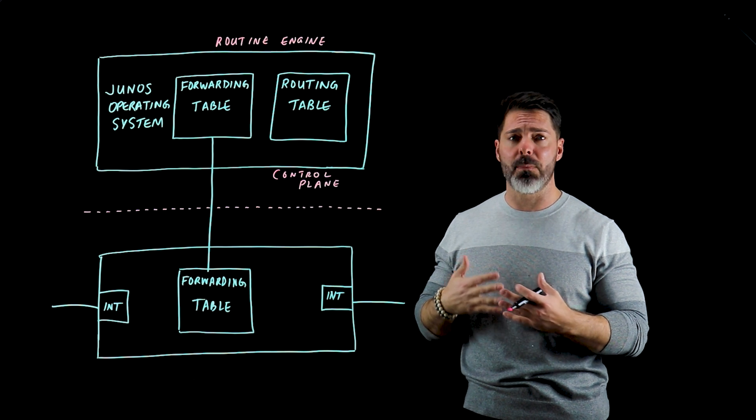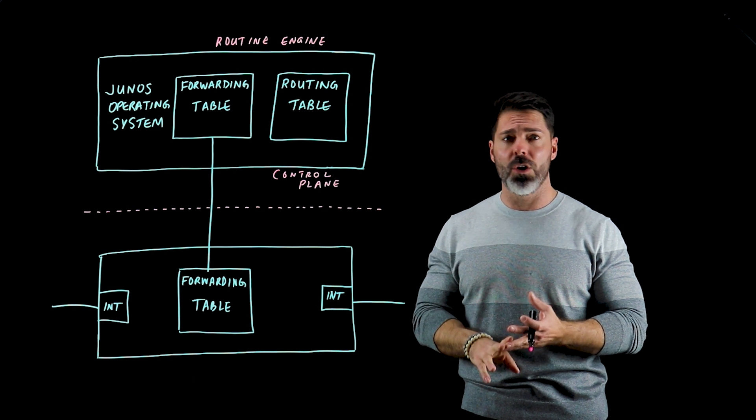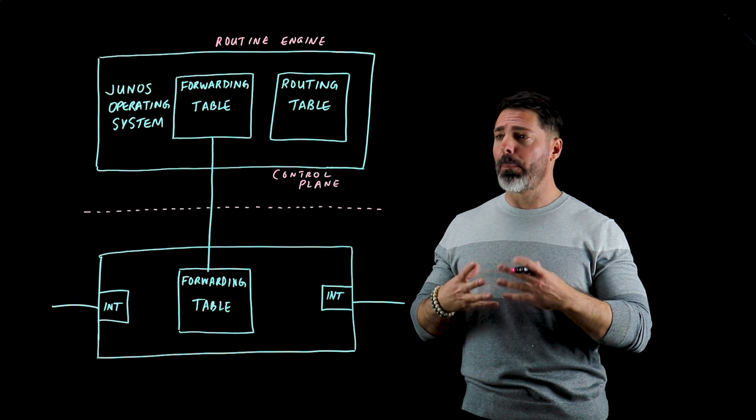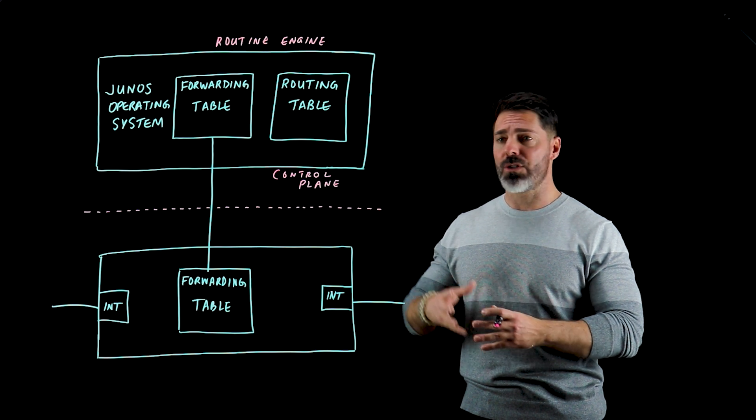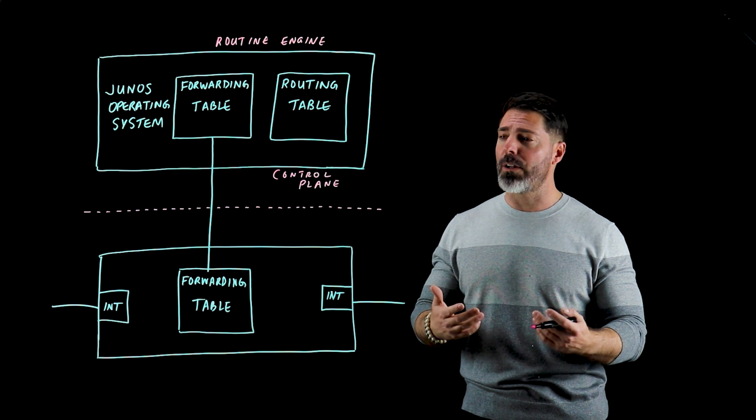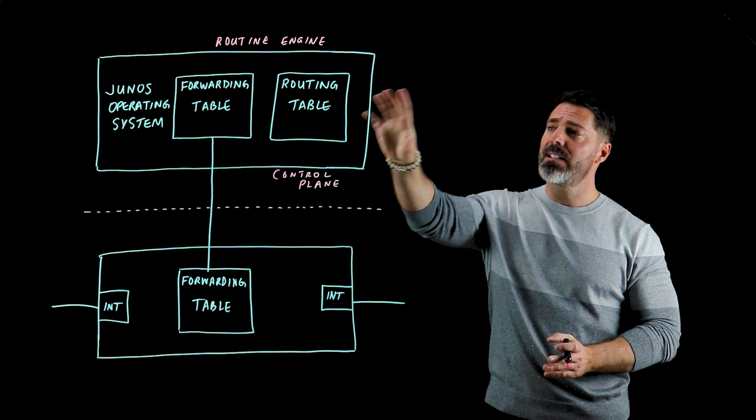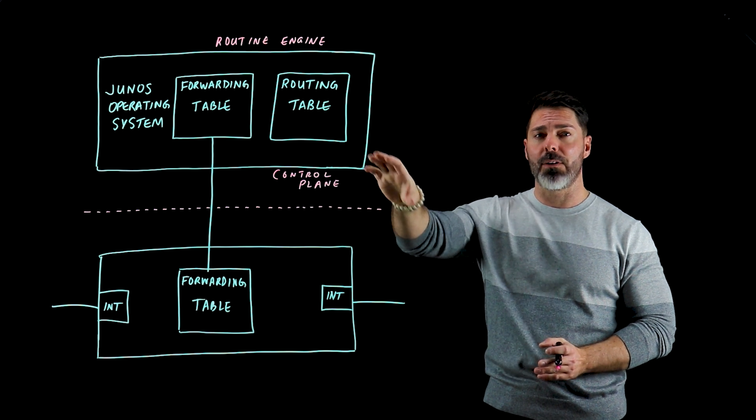The routing engine is monitoring things like fans, alarms, temperature controls. It truly is the brains of the operation right here. So if we're running BGP or OSPF, these are all routing protocols that I'll be covering a little bit later. All those things actually exist up here in the routing engine.